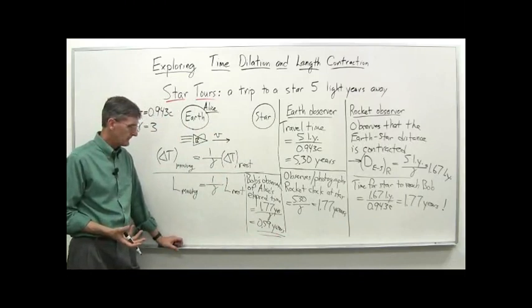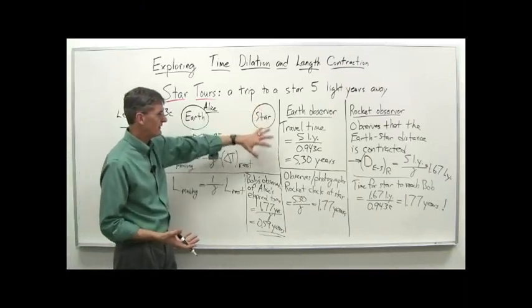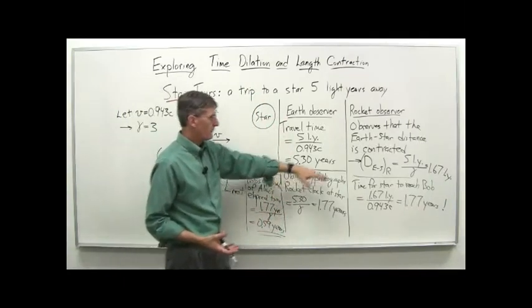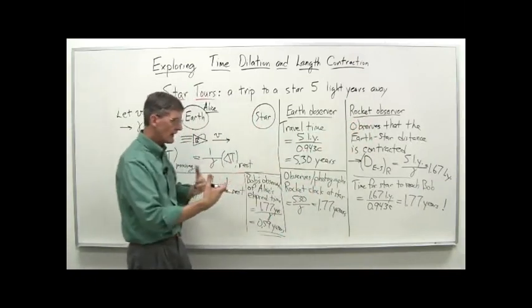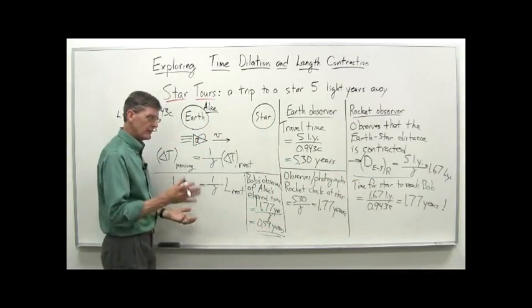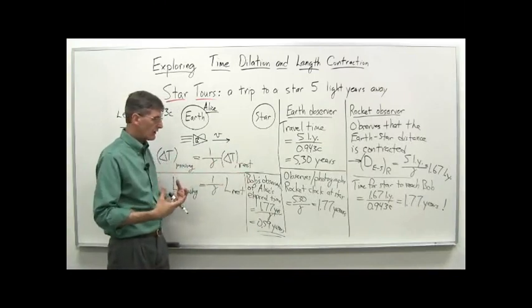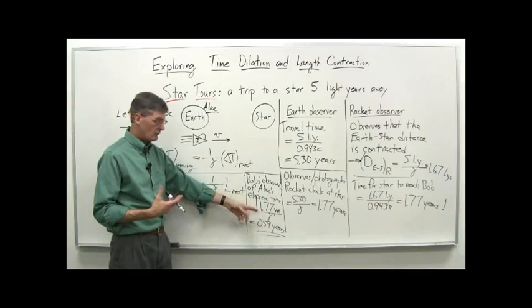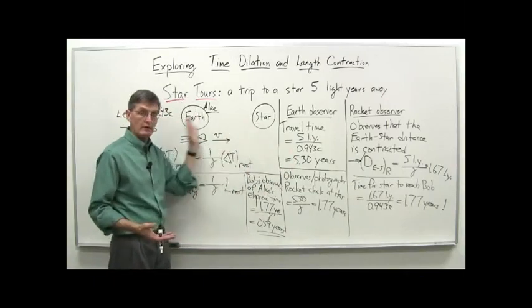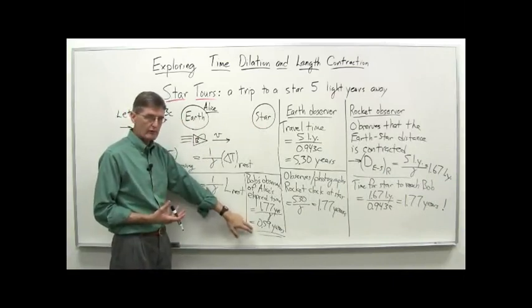Now you really go 'huh?' — how can this make sense? Alice sees Bob's clocks running slowly, so instead of 5.3 years she gets 1.77 years on his clock. From Bob's side, the distance is contracted and his clock runs for 1.77 years. But then Bob looking at Alice's clocks running slowly — by a factor of gamma — gets 0.59 years. You've got 5.3 years as the elapsed time on Alice's clocks according to Alice. How is Bob getting 0.59 years for the elapsed time on Alice's clocks?